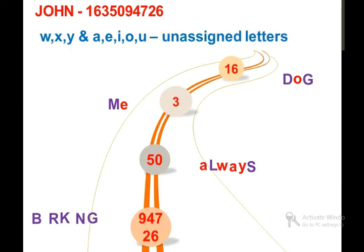We will use W, X, Y, and A, E, I, O, U - unassigned letters. We will use these letters to make the word. We can use L and S. We will use W, A, Y. We will use a word. This means a word for 94726. We will use vowels A and I. When we use this word, we can make a word: dog, me, always, barking.